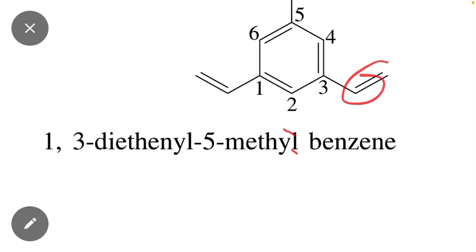These two substituents are called diethenyl, both are the same so it's called diethenyl. If double bond is not present, this substance is called diethyl, but this substance contains a double bond, so diethenyl.